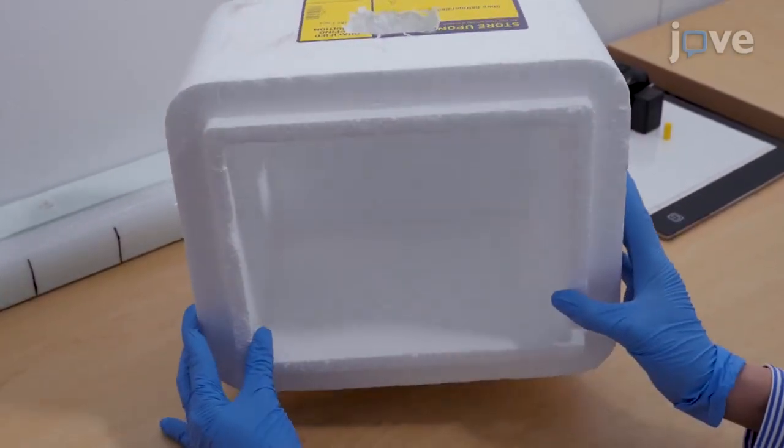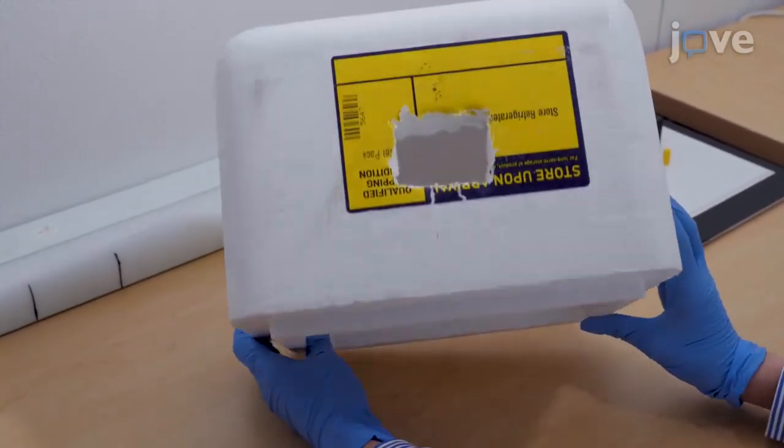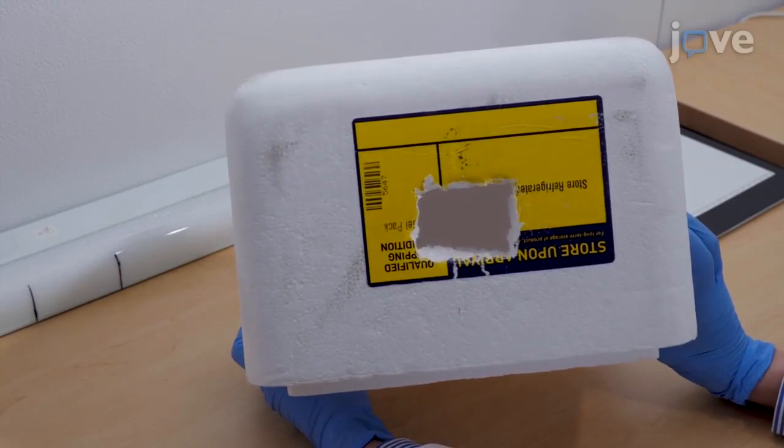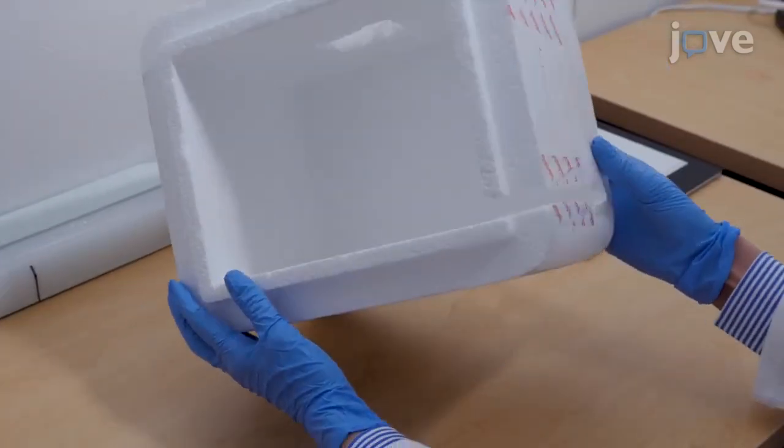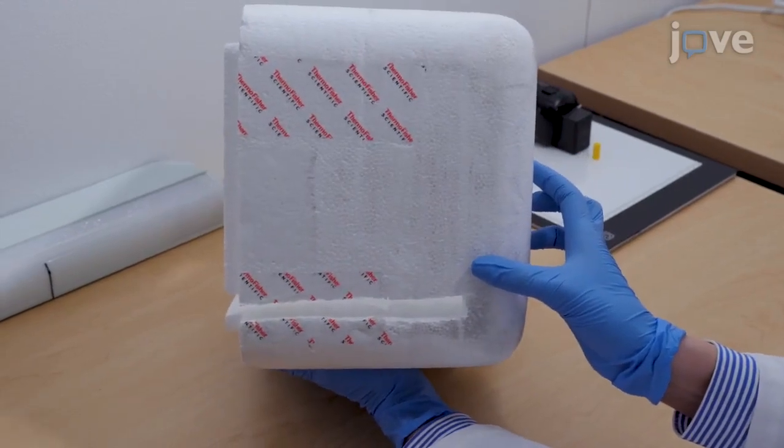To create the filming chamber, cut a hole the size of the video camera lens on one side of a polystyrene box and an additional slit the size of the illumination pad on the opposite side.